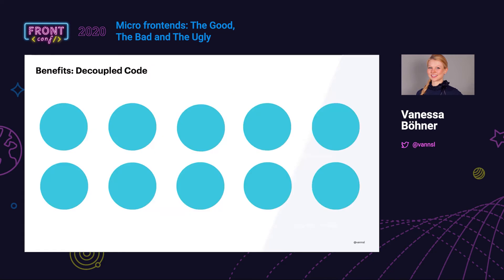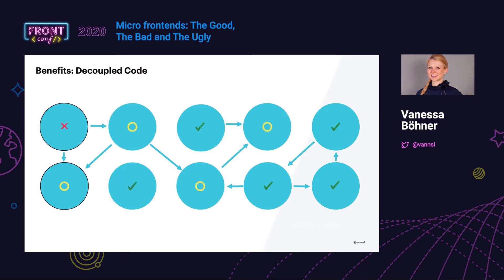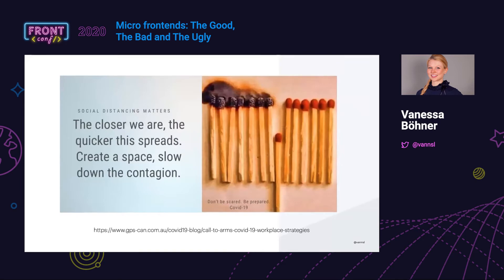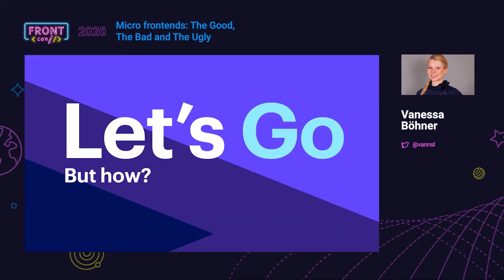Another benefit is decoupled code. With a deeply coupled monolith, one problem runs and spreads through the whole application. With micro frontends you have a clear cut — a bug can't simply hop over to another repository. So if you do something wrong, you break at most one or two micro frontends, not everything.